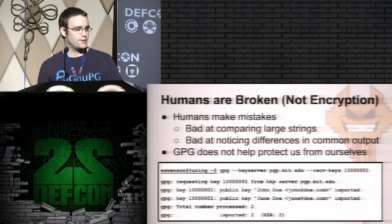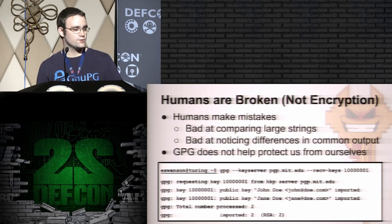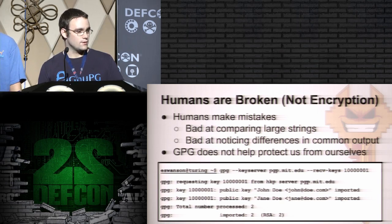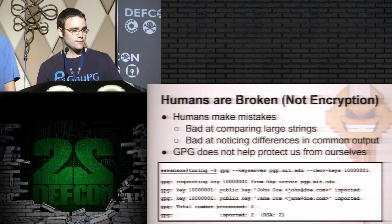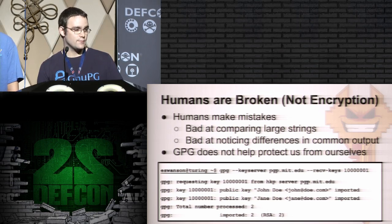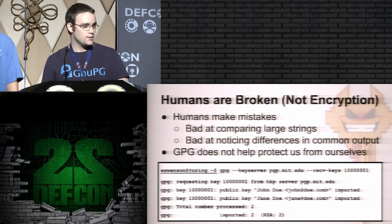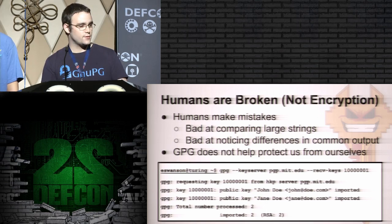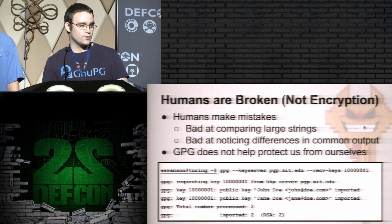The truth is that humans are broken, not the encryption. Humans make mistakes. We're bad at comparing long strings, and we're particularly bad at noticing differences in output that we see often. As you can see, if you request the key with a short ID of 10000001 from the PGP.MIT.edu key server, you will receive two keys back — one for John Doe and one for Jane Doe. If you import keys frequently, you might not notice that you got two keys, or that they were for two different people. But they're both in your key ring now, and GPG doesn't say anything to warn about this — it returns the same status code and everything looks normal.